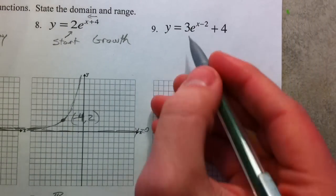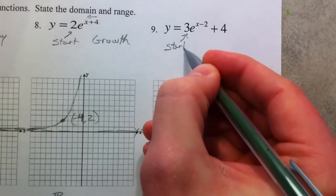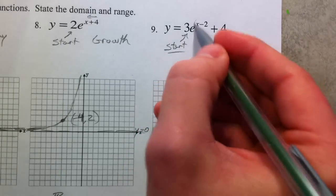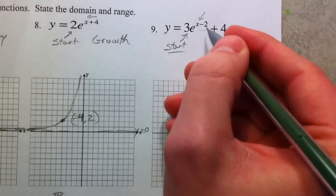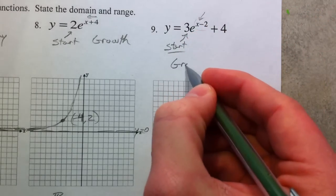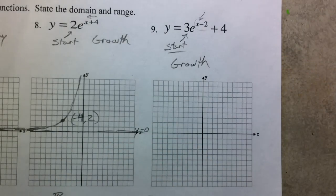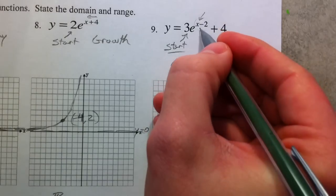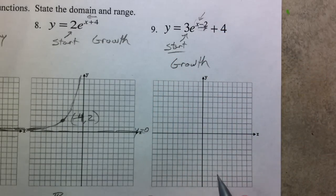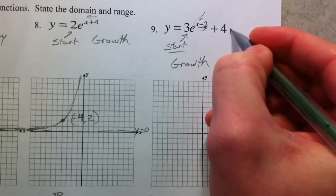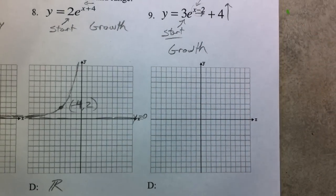Alright, number 9. 3 is still the starting value. Recognize that x is a positive exponent, and so this still represents growth. And so it's still going to grow like the second one here. And then this minus 2 is with the x, so it's opposite of what we think it should. It actually moves it to the right, and the plus 4 affects it vertically and moves it up 4.